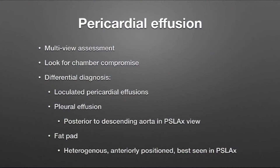Particularly in obese patients, you can see a fat pad. A fat pad will typically sit in front of the heart and can have a heterogeneous appearance — it doesn't look completely clear like a fluid structure. It is best seen in the parasternal long axis view. I'll show you examples of each of these.